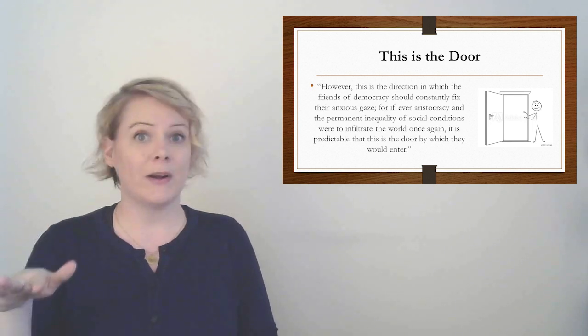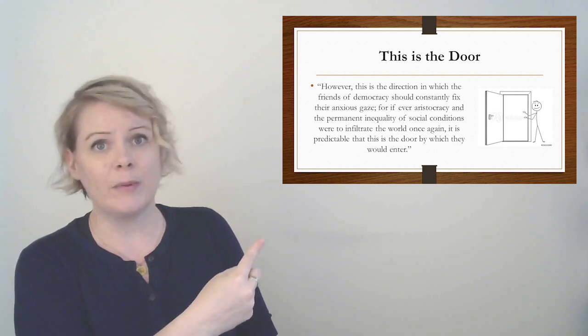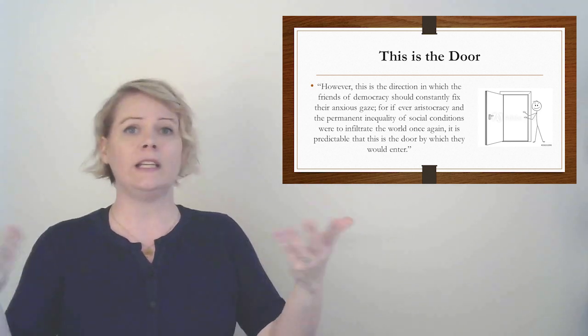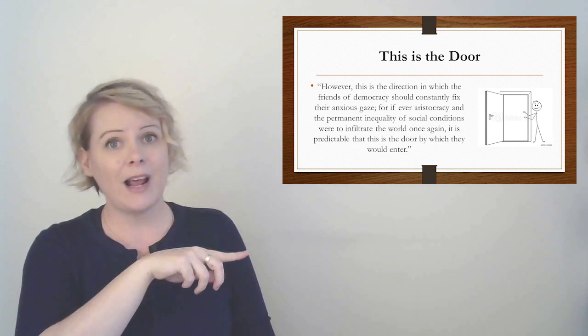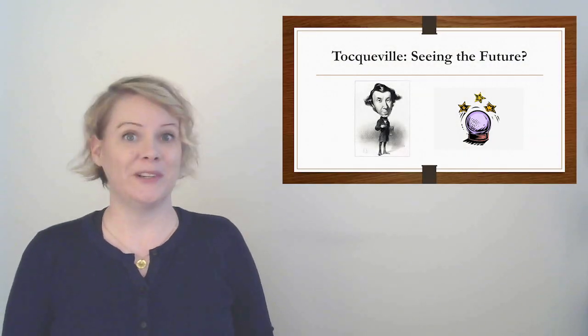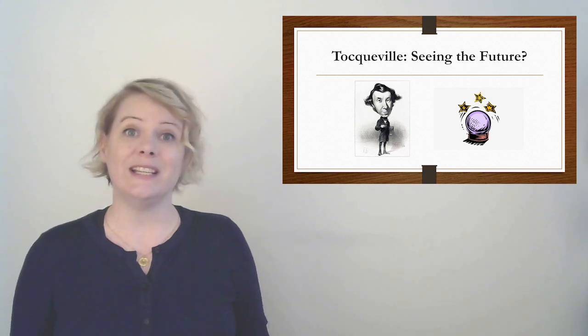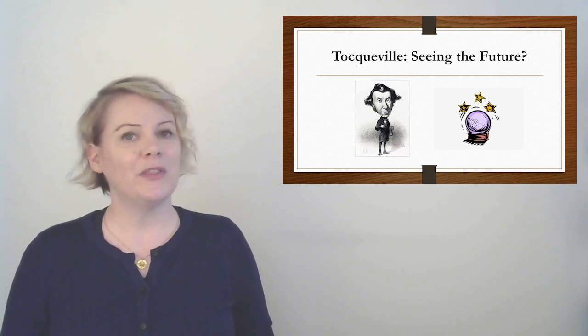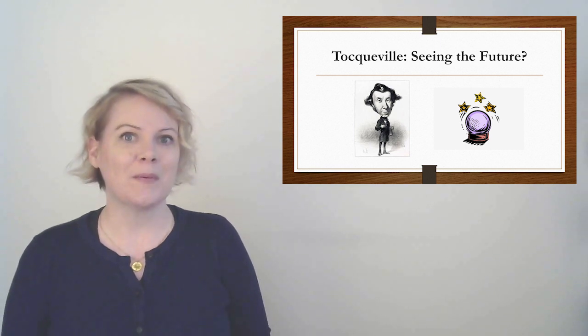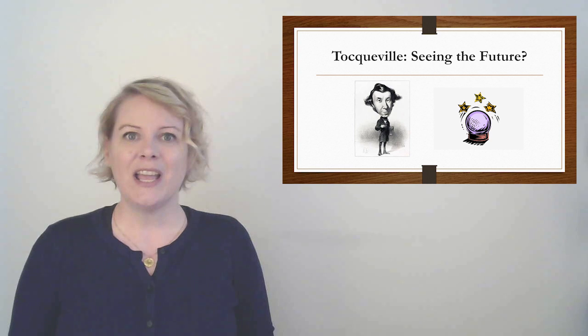However, this is the direction in which the friends of democracy should constantly fix their anxious gaze. For if ever aristocracy and the permanent inequality of social conditions were to infiltrate the world once again, it is predictable that this is the door by which they would enter. So he's basically saying, hey, listen, if y'all are worried about class divisions, y'all need to watch this. This is going to be the problem. This is the door by which class distinctions are going to come back in. So he's like, you thought you made this whole equal democratic nation, but y'all need to be careful, because the same thing might happen again. And if it does, this is how. Predicting the future. That's why Tocqueville is so cool. So, basically, Tocqueville did a tour of America and figured out what makes Americans tick. And what it is, is self-interest. We used democracy to even the playing field, and we used industrialization to even the playing field. But the only things Americans ever really wanted were creature comforts. And honestly, I think he's right. So in class this week, we'll talk about how this played out, and how America looks today, and whether Tocqueville was right about all the stuff he said. So, I'm looking forward to talking with you, and I'll see you soon. Thank you.